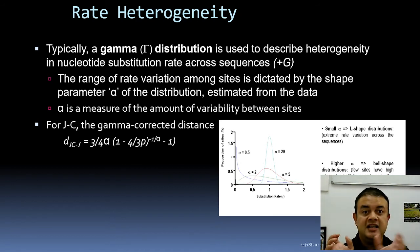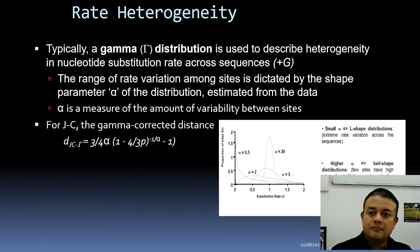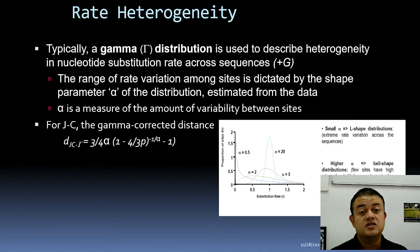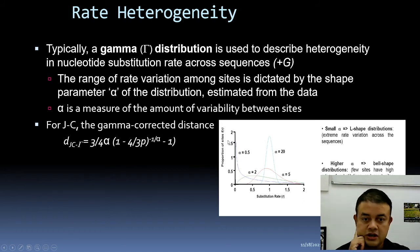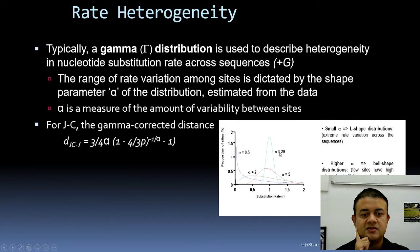The range of rate variation among sites is dictated by the shape parameter alpha of the gamma distribution, estimated from the data. If alpha is very low, you get an L-shaped curve. As alpha increases the curve flattens, and at very high alpha like 20, you get a bell-shaped curve similar to a Gaussian distribution.